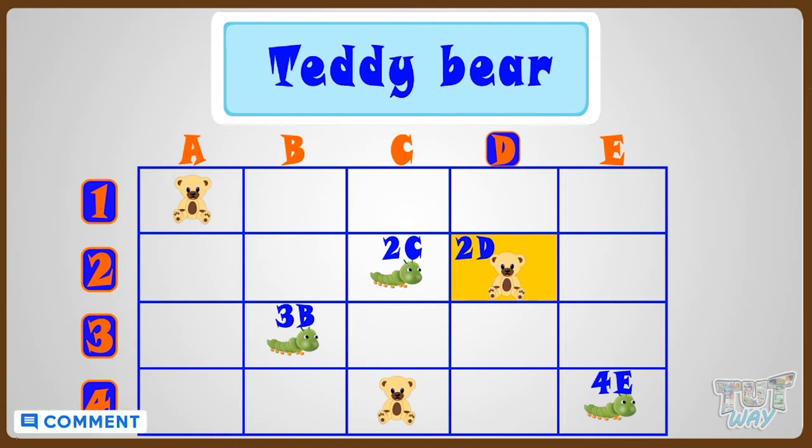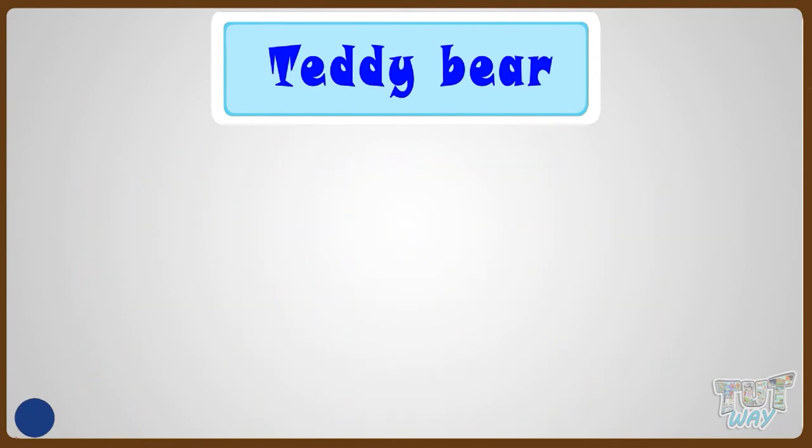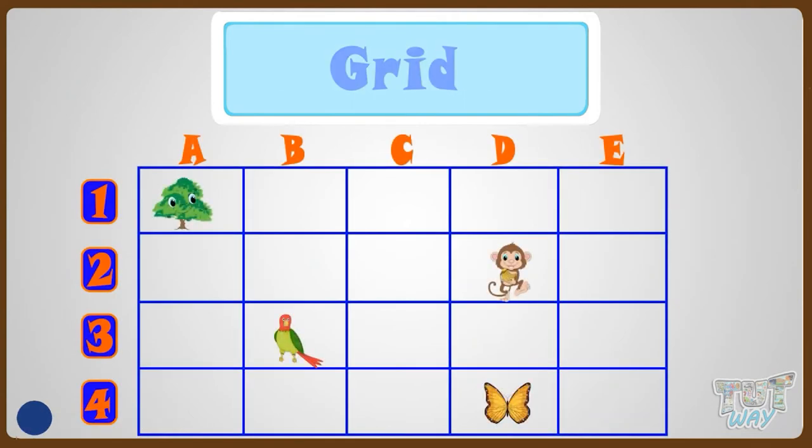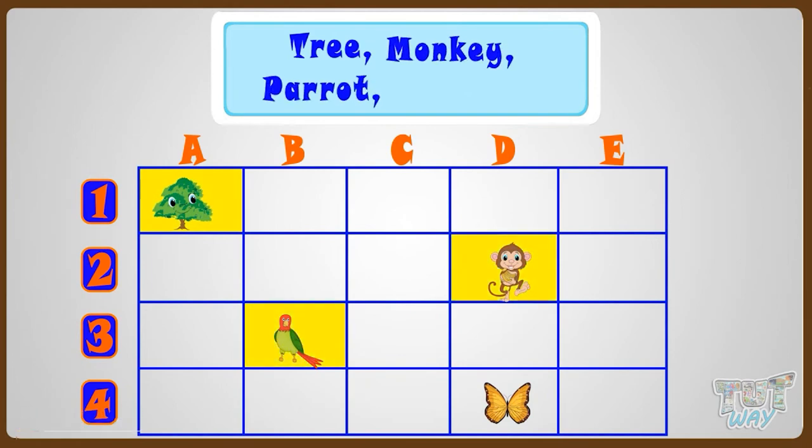So kid, now let's move to another example. Here is another grid showing the position of 4 things: a tree, a monkey, a parrot, and a butterfly.